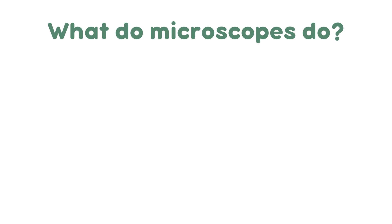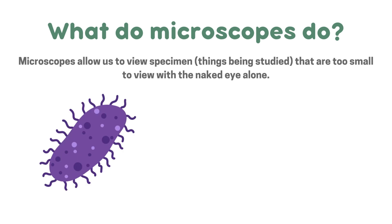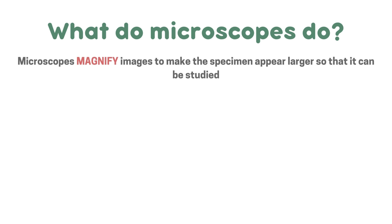The first thing we need to know is what do microscopes do. Microscopes allow us to view specimens, which are things being studied, that are too small to view with the naked eye alone. For example, this bacterial cell which can be viewed using this light microscope here. Microscopes magnify images to make the specimen appear larger so that it can be studied.